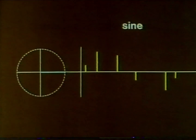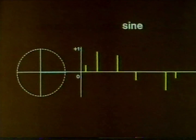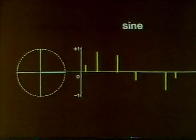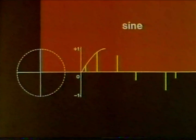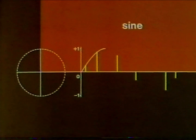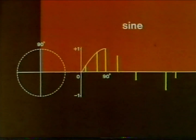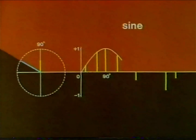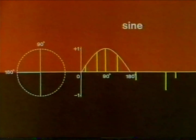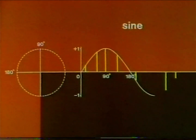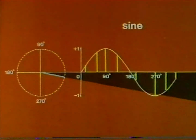A vertical axis and a scale. The sine of 90 degrees is one. Sine 180 degrees is zero. Sine 270 degrees is minus one. And the sine of 360 degrees is zero.